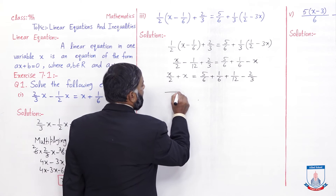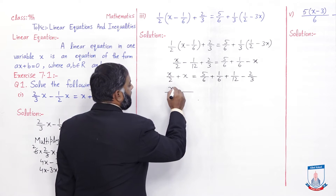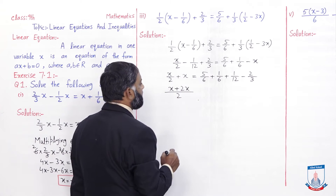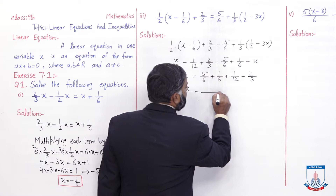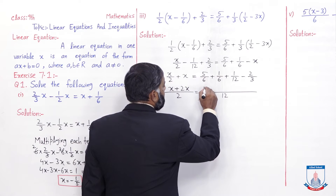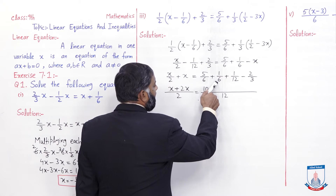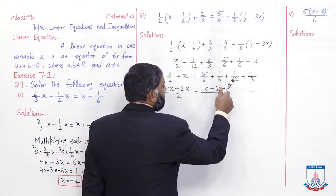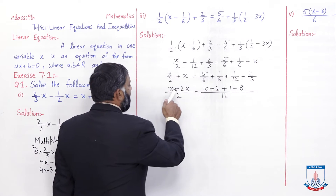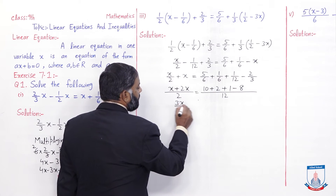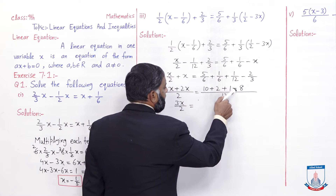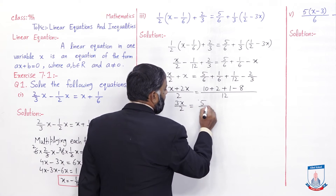Ab iska LCM 2 aa gaya. Left side pe: x/2 plus x. LCM ke liye denominator 2 pe divide karein: result 2 aaya, 2 ko x se multiply kiya to 2x. Ab x plus 2x equals 3x over 2. Right side pe LCM 12 aa jayega. 12 divided by 6 equals 2, times 5 equals 10. Plus 2, times 1 equals 2. Plus 1, times 1 equals 1. Minus 12 divided by 3 equals 4, times 2 equals 8. So 3x over 2 is equal to 10 plus 2 plus 1 minus 8, which equals 5 over 12.